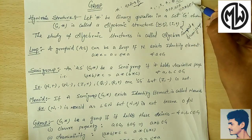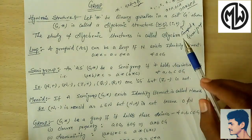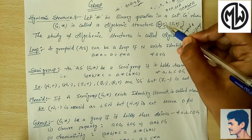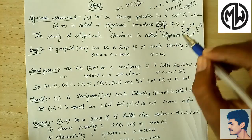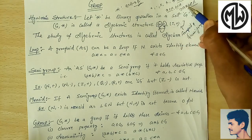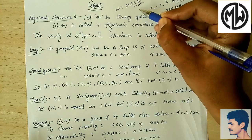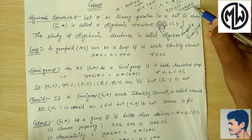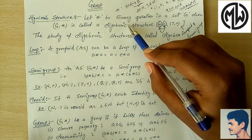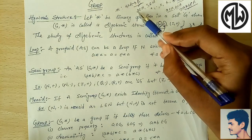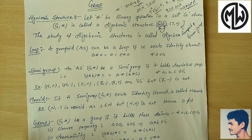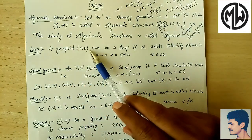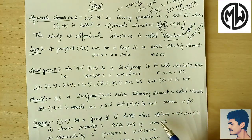then it implies that a star b also belongs to this set. For example, (N, +) and (Z, +): N is the set of natural numbers and Z is the set of integers. For these sets, this binary operation holds the closure property. So we take 2 and 3 — both belong to natural numbers. Binary operation is plus, so 2 + 3 = 5, and 5 also belongs to natural numbers. So this is an algebraic structure. The study of algebraic structures is called algebra.